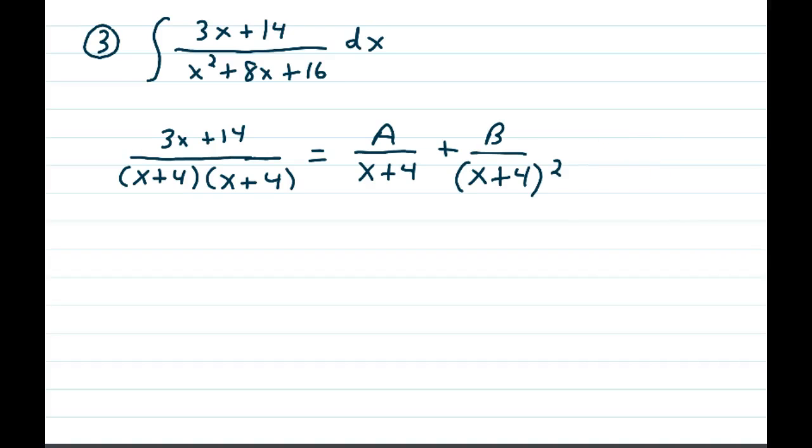So instead, we create the one fraction, A over x plus 4, but we have to introduce a larger denominator in the second piece, which is B over x plus 4 squared. This kind of problem in most textbooks is called the repeated linear factors.